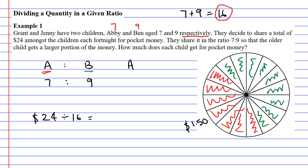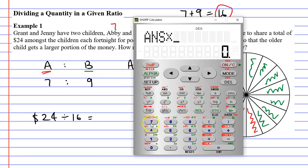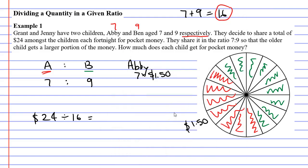Let's look at Abby. She gets seven slices of pizza, each worth $1.50. What is seven times $1.50? We get $10.50. So Abby gets $10.50 for pocket money.